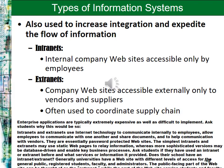Information systems are also used to increase integration and ease the flow of information through intranets and extranets. Intranets are internal company websites accessible only by employees who work for the company and cannot be accessed from home. To access internal resources from home, employees use extranets. Extranets are company websites accessible externally only to vendors and suppliers that the company authorizes, and are often used to coordinate supply chain members or partners.